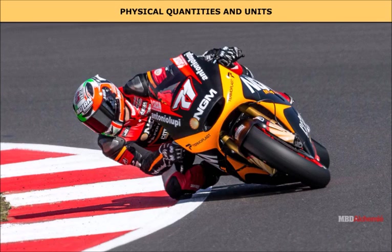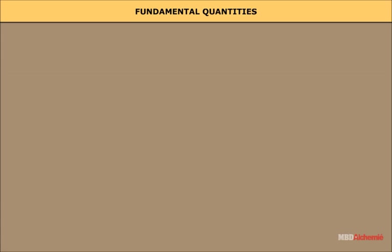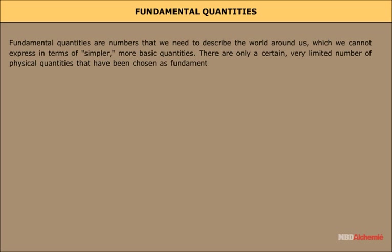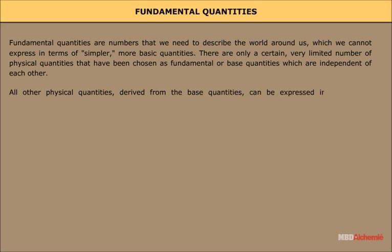Fundamental quantities. Fundamental quantities are numbers that we need to describe the world around us which we cannot express in terms of simpler, more basic quantities. There are only a certain, very limited number of physical quantities that have been chosen as fundamental or base quantities which are independent of each other. All other physical quantities derived from the base quantities can be expressed in terms of a combination of the fundamental or base quantities.